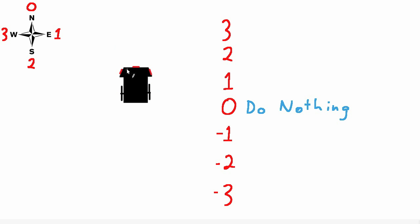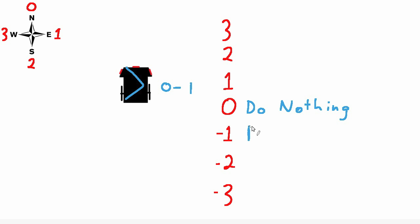However, if the find_best_neighbor function tells us we should turn east, then our robot's heading zero minus the find_best_neighbor suggestion, which is a one, gives us a negative one. That would mean that our robot should turn right. So whenever we see a negative one, we should make our robot turn right.